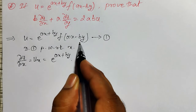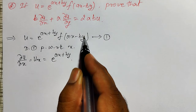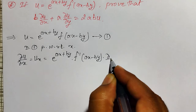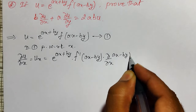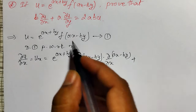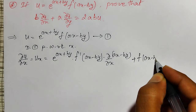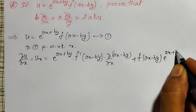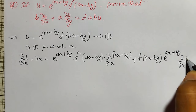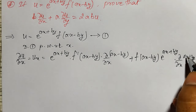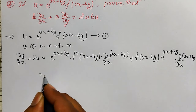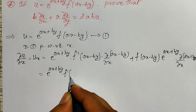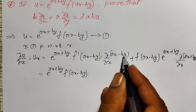Derivative of f of ax minus by — chain rule I have to use here while differentiating. This is considered as a composite function; its derivative will become f dash of ax minus by into partial derivative of ax minus by with respect to x. Plus, the second function f of ax minus by as it is, times derivative of e raised to ax plus by — chain rule again — that is e raised to ax plus by into partial derivative of ax plus by with respect to x.